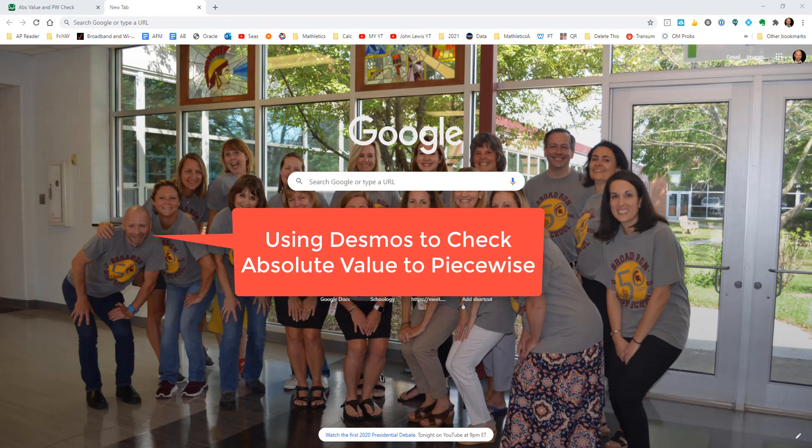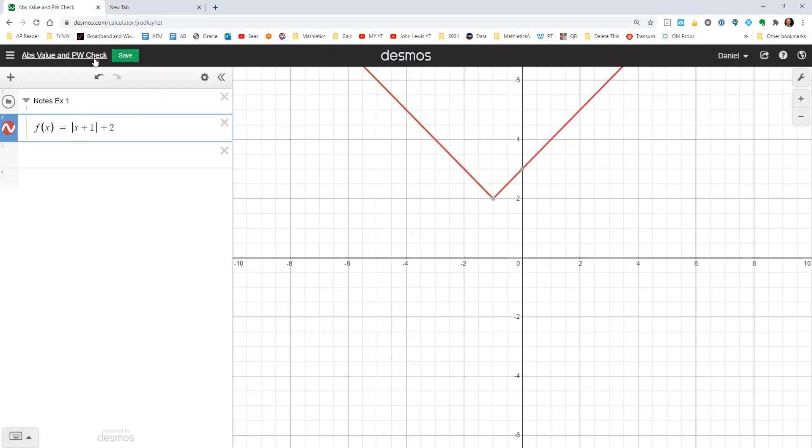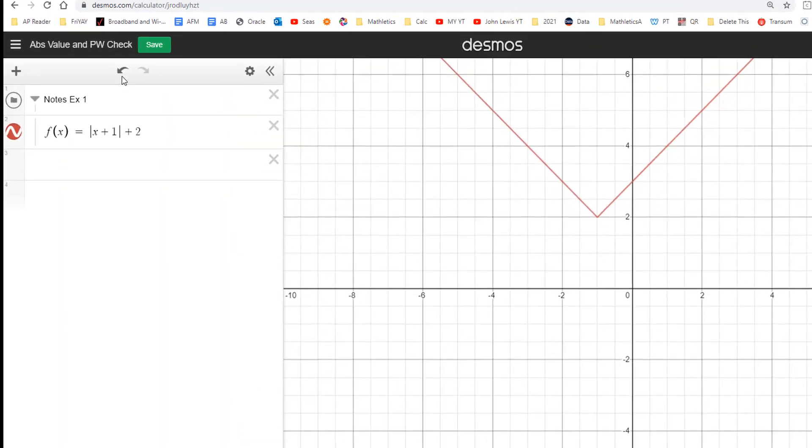So, of course, first we're going to open up Desmos. Go ahead and sign in using your login credentials for Desmos. And when you do that, what I want you to do is create this title for the graph: abs value and pw check. So that's going to be the name of our file here because we're going to save that. After you've logged in, go ahead and create that name for it and then save that.